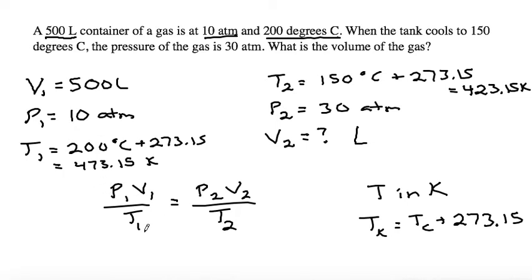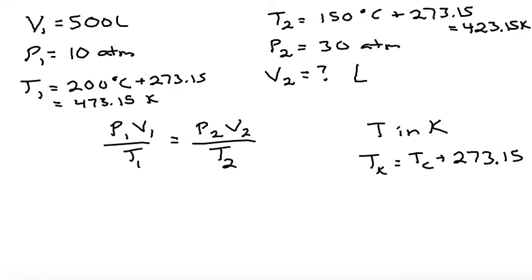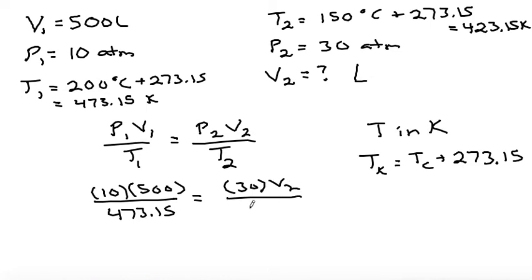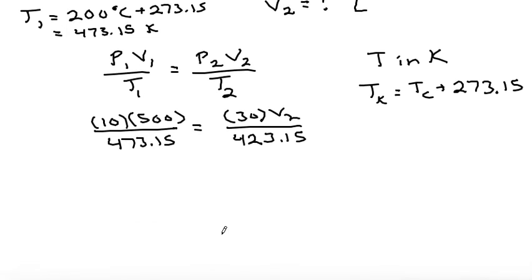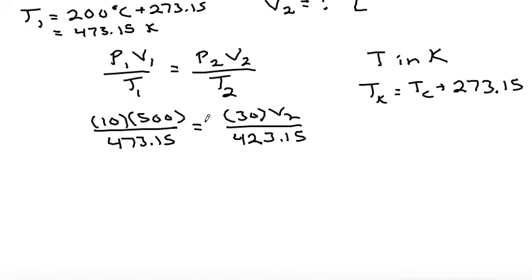So now we can plug in our numbers. Since we know all of our units are going to cancel out and our volume is going to be in liters, we don't have to plug in our units. So we plug in 10 times 500 over 473.15 is equal to 30 times V2 over 423.15. So now we can solve for our V2 first by clearing our fraction by multiplying on both sides by the denominators, using the butterfly method. So the 423.15 times the top on the left and the 473.15 times the top on the right.